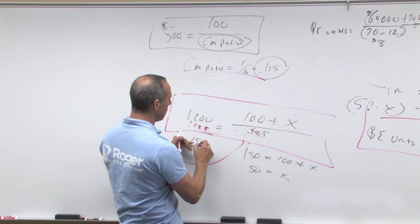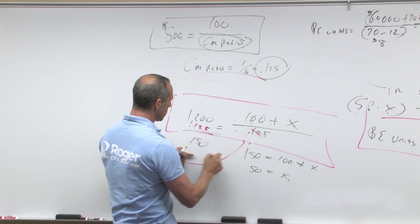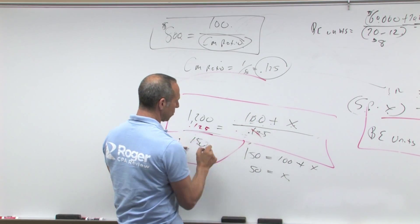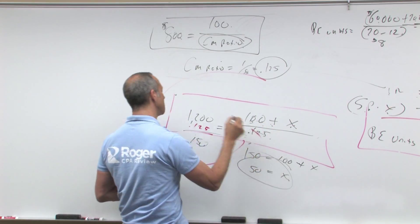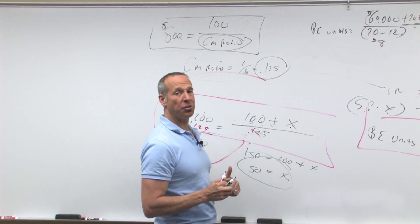That's gone. So 150 equals 100 plus X, minus X, minus 100, minus 100, X equals 50. And if you plug it in, 100 plus 50 divided by 0.125 should equal 1 million two.